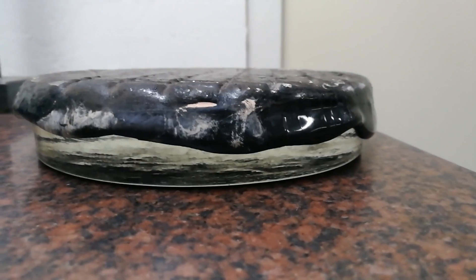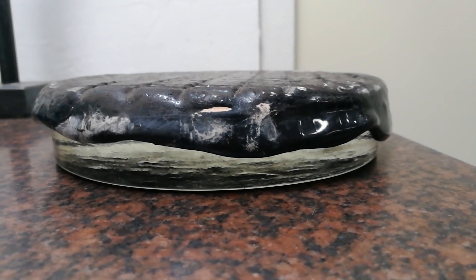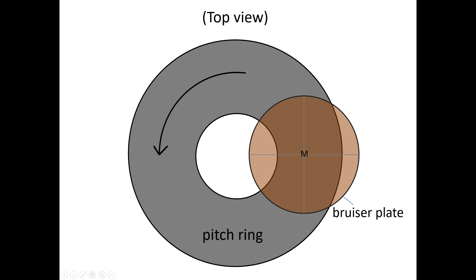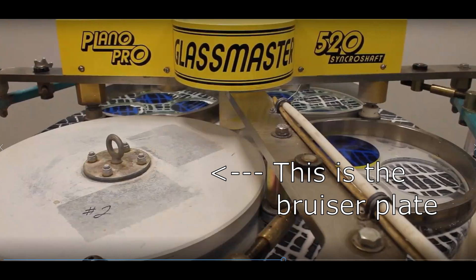And in a continuous pitch polisher, this principle of constant flowing is exploited. So in the machine, a ring of pitch is constantly rotated and the flatness of the pitch surface is controlled by a heavy flat disc called the bruiser plate.